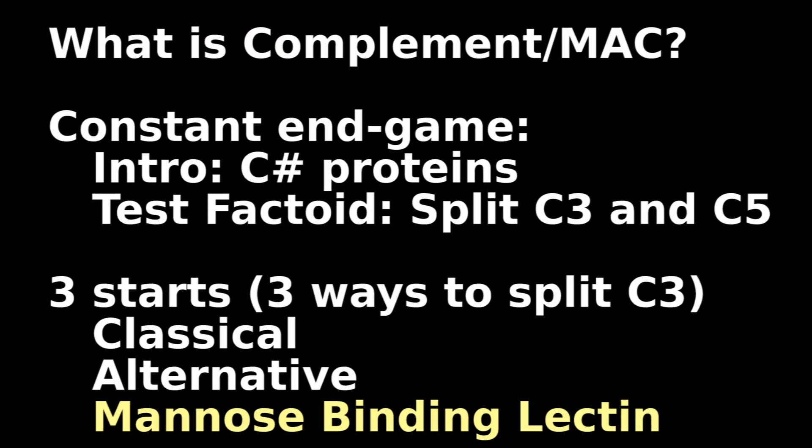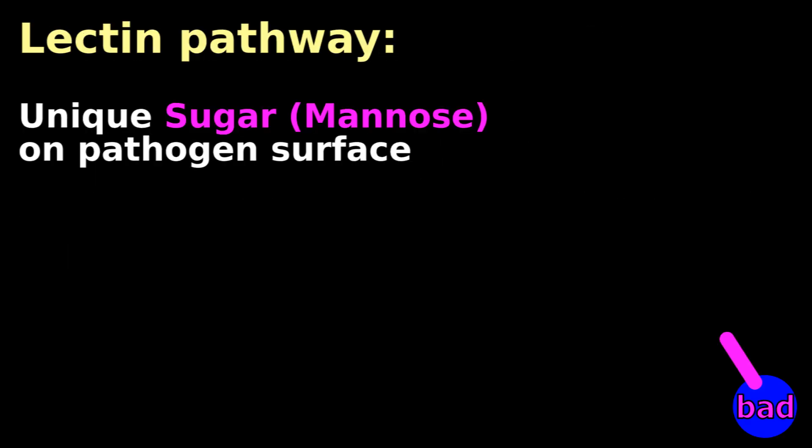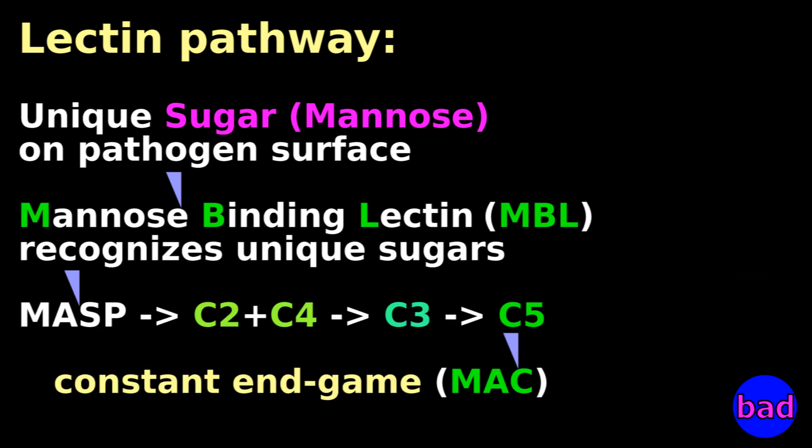The final pathway is the lectin pathway. Some pathogens have unique sugars on their cell surface, which our cells lack. When your body finds these unique sugars, it knows that this cell is a pathogen which must be membrane attacked. Mannose binding lectin is what recognizes these unique sugars, and MBL eventually activates the constant endgame.